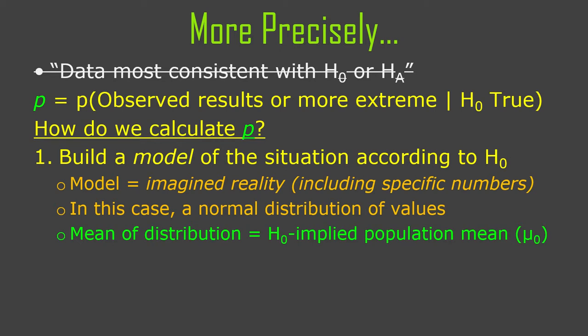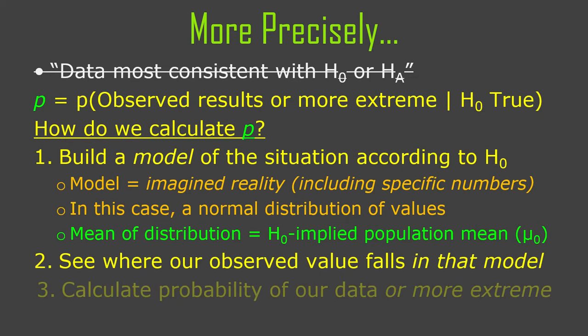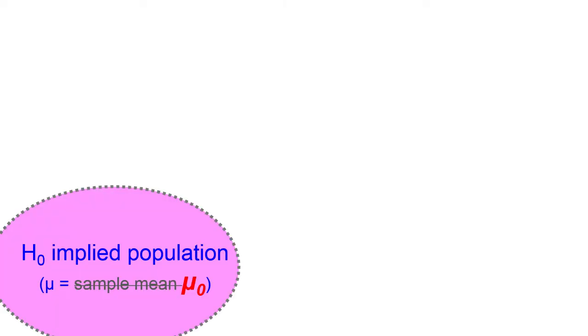Once you've built that model and put it down in numbers, we slap our data on there — we have an observed value, a mean in this case — and we see where it falls. Now that we have this model, we've specified enough to calculate an actual probability: the probability of our data or more extreme, meaning more unlikely if the null hypothesis were true.